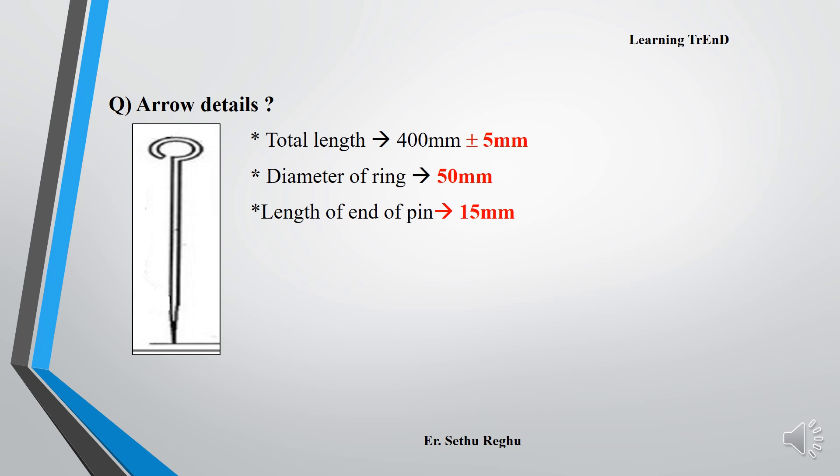Arrow: The total length of the arrow is 400 mm plus or minus 5 mm. The circular portion is a ring with a diameter of 50 mm. The length of the end pin is 15 mm.